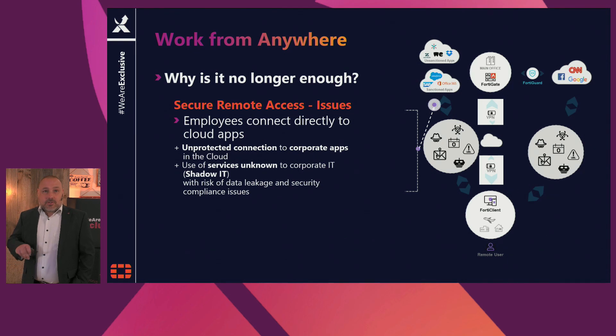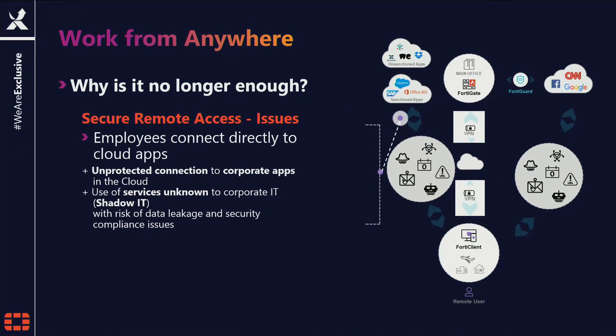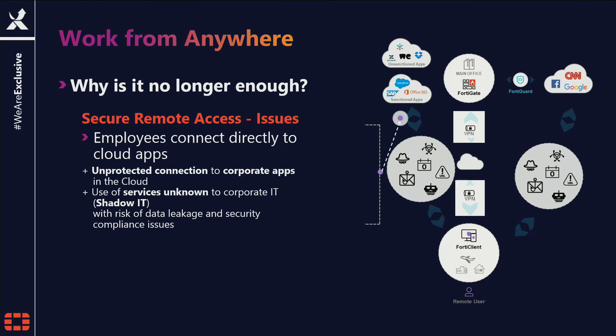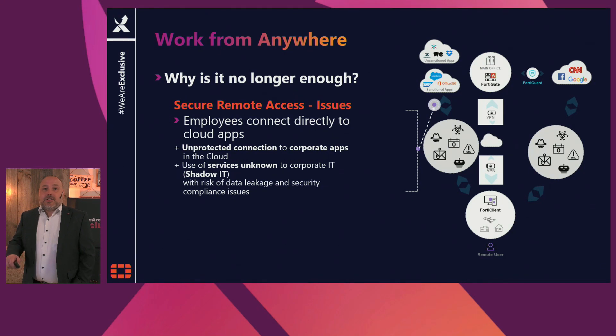This exposed direct access to the internet is unfortunately not the only issue. For their day-to-day business, people are increasingly using web services like Office 365 or Salesforce. And again, they often do this by bypassing the VPN. With this kind of web services used unknowingly by the IT department — for example, to exchange big files — we speak of shadow IT. The problem is that the IT department has no visibility and there is a higher risk of data leakage.